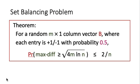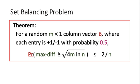Luckily, we can claim the following theorem. For a random m by 1 column vector B where each entry is +1 or -1 with probability 0.5 — i.e., a random partition — the probability that the maximum difference is greater than or equal to √(4M log N) is less than or equal to 2/N. This bound is roughly of order √(M log N), which is really small. So in most cases, the random partition won't look bad. If you encounter a bad random partition, just perform another random partitioning — the chance of getting a bad one is very small, of order √M.